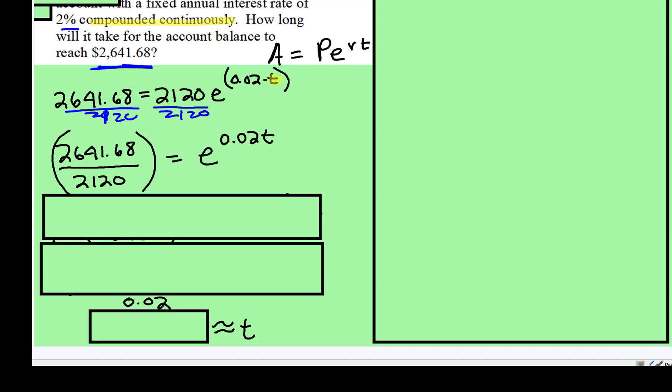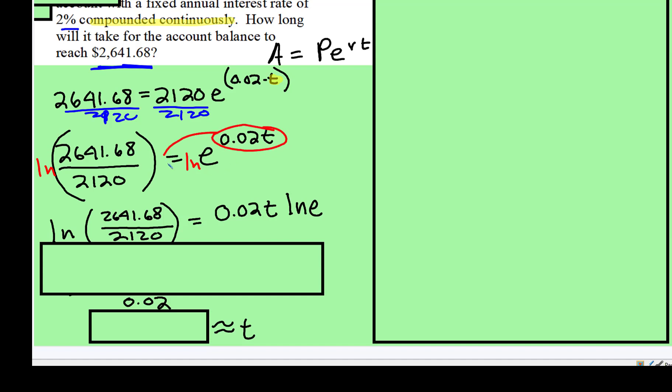You're going to take the natural log of both sides. And remember, when you take the natural log, then you have to use the properties of logarithms. So this exponent comes down in front, which is what I did right there.